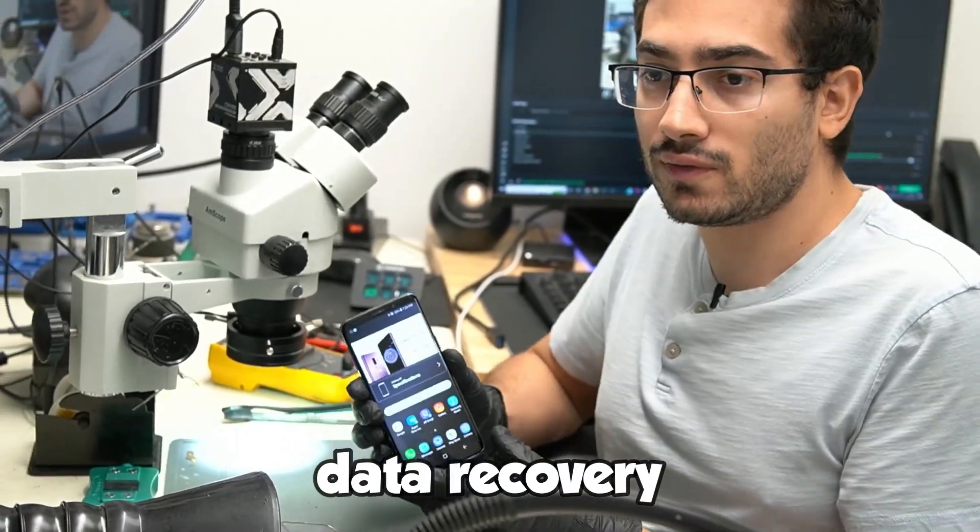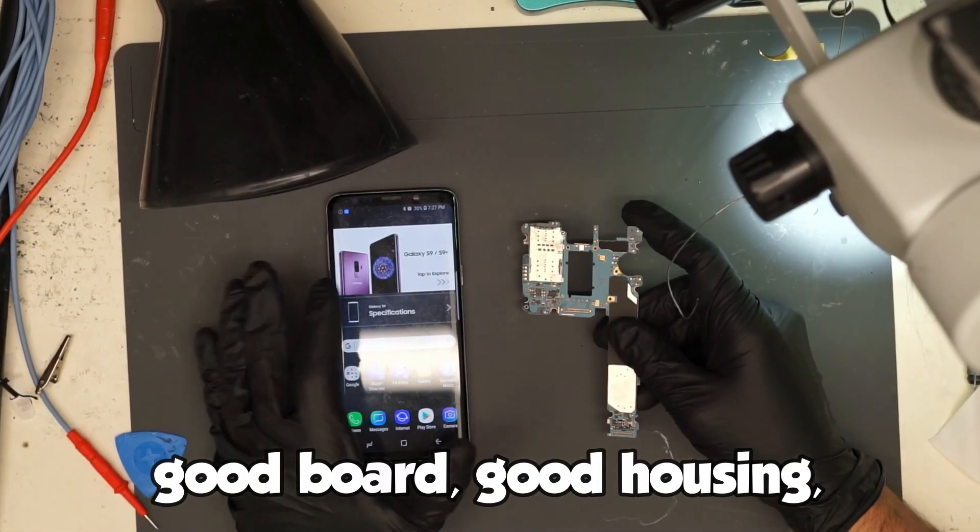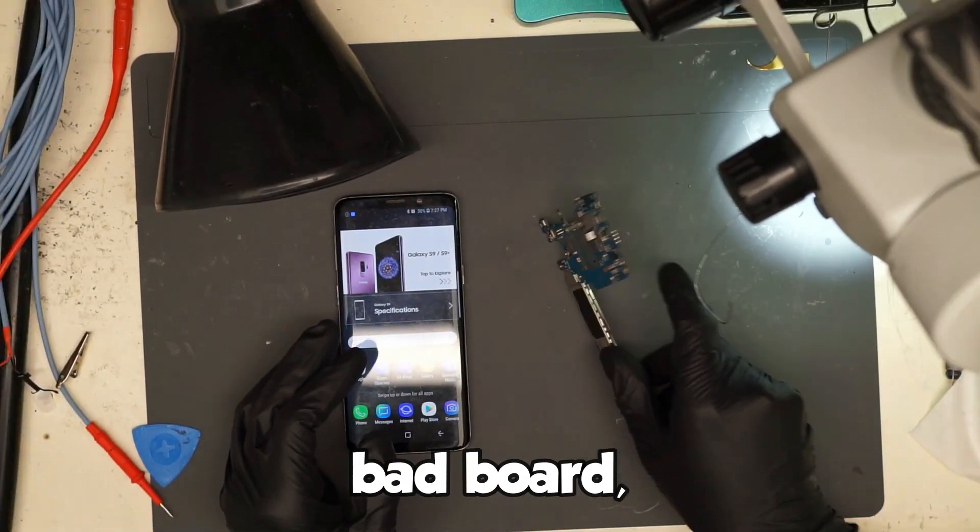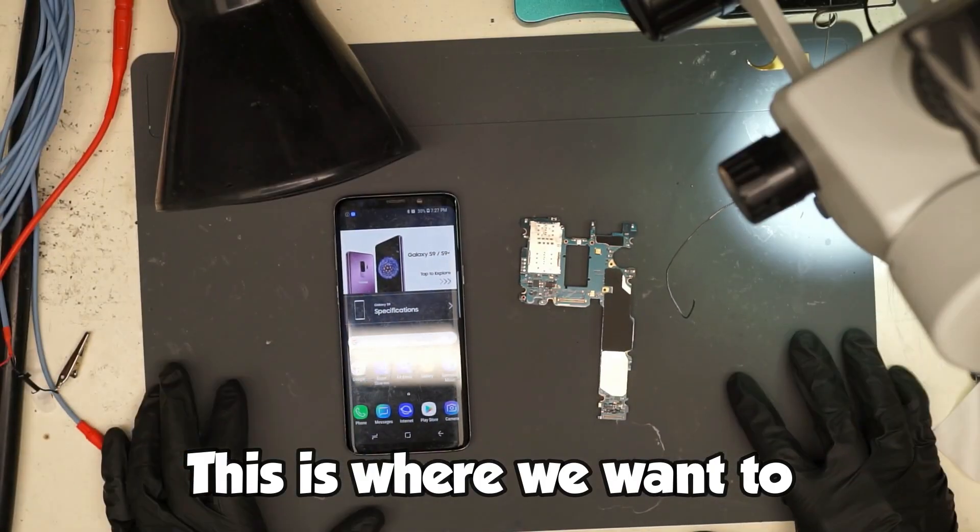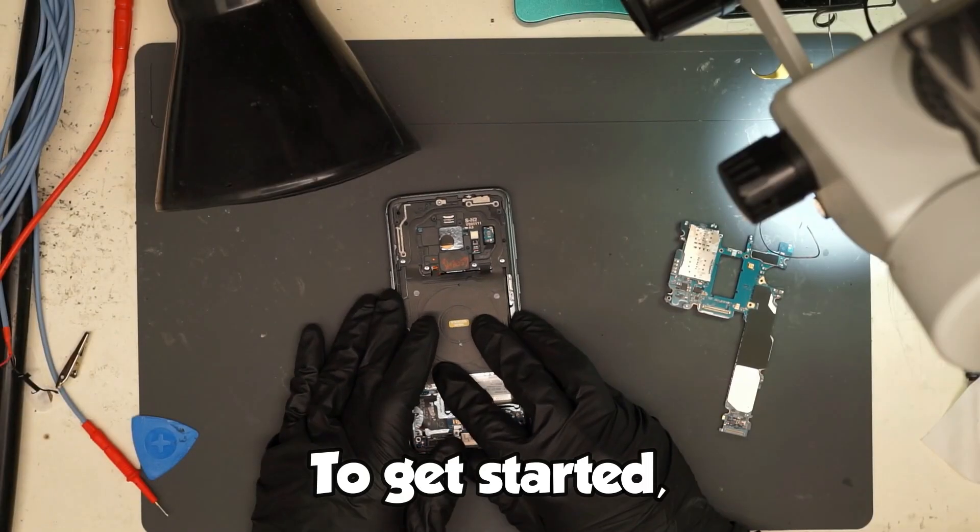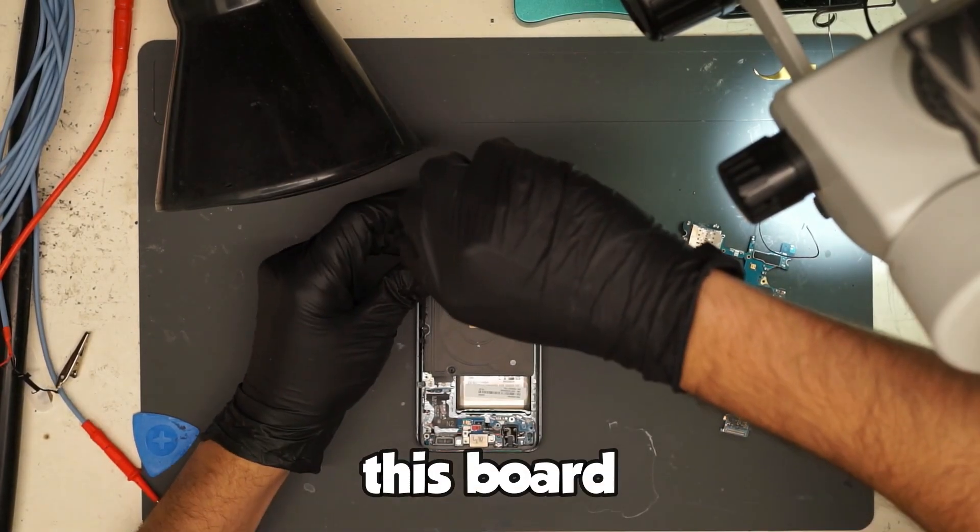Samsung S9 data recovery. So, good board, good housing, bad board, customer board. This is where we want to recover data from. To get started, let's remove this board and put it aside for a moment.